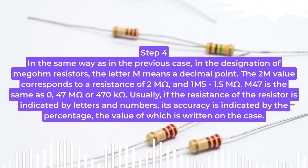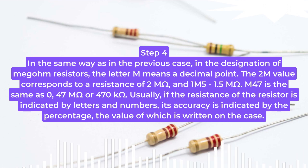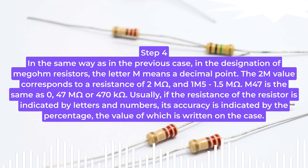Step 4: In the same way, in the designation of megohm resistors, the letter M means a decimal point. The value 2M corresponds to 2 MΩ, and 1M5 to 1.5 MΩ. M47 is the same as 0.47 MΩ or 470 kΩ. If the resistance is indicated by letters and numbers, its accuracy is indicated as a percentage written on the case.